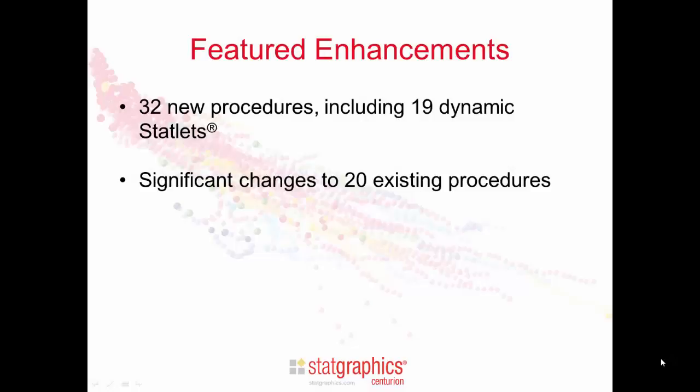Version 17 is a major upgrade, featuring 32 new statistical procedures and significant changes to 20 existing procedures. The new procedures include 19 dynamic statlets, where users interact with the analysis by changing options on a toolbar and they see the effect of those changes instantly on the graph.